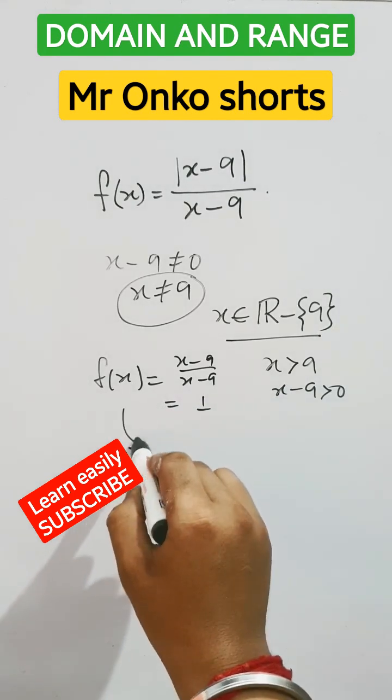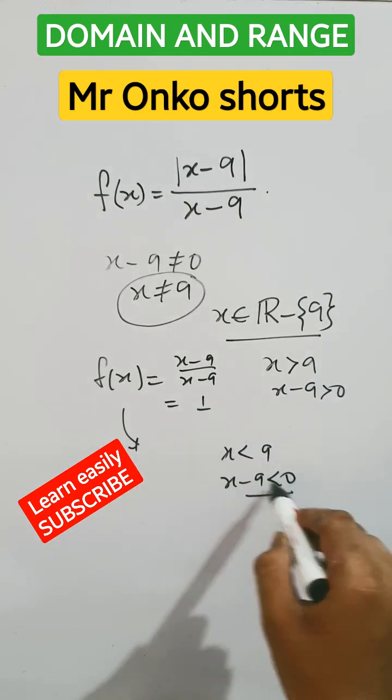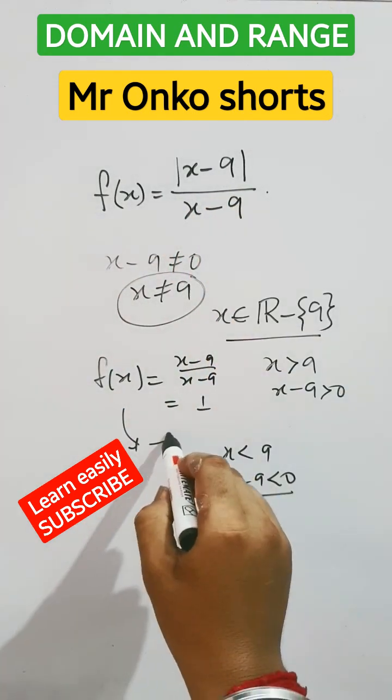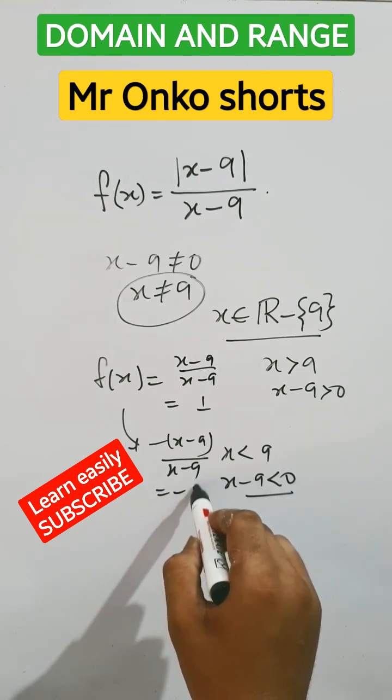And if x is less than 9, that is x - 9 less than 0, then modulus of x - 9 will be minus (x - 9) divided by x - 9, which equals minus 1.